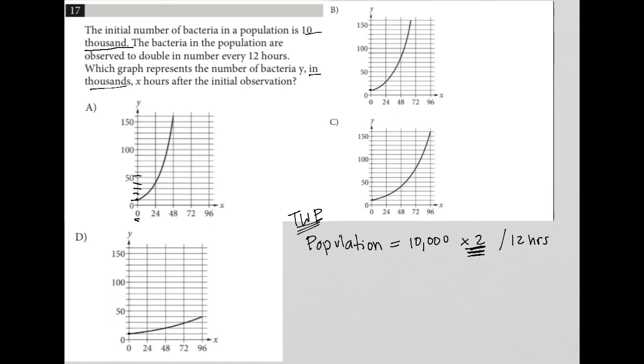Now, what will we expect to happen at the next marker on the X axis, which is 24 hours? Well, if it doubles every 12 hours, then we'd expect it to be at 20,000 12 hours later. But then at 40,000 an additional 12 hours later, which means 40,000 at 24 hours after our initial observation.